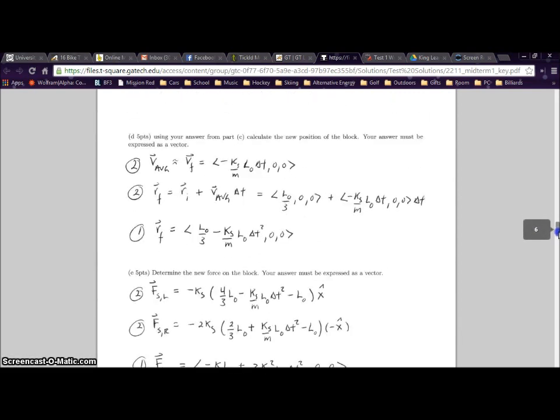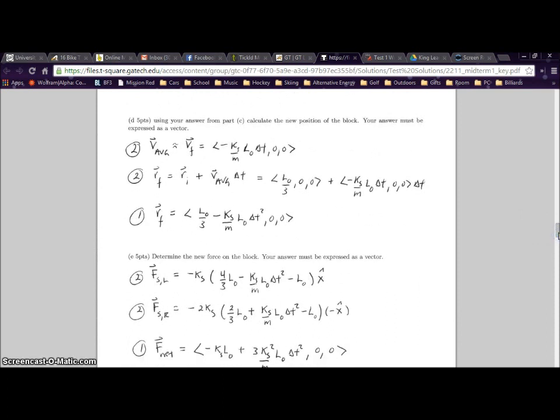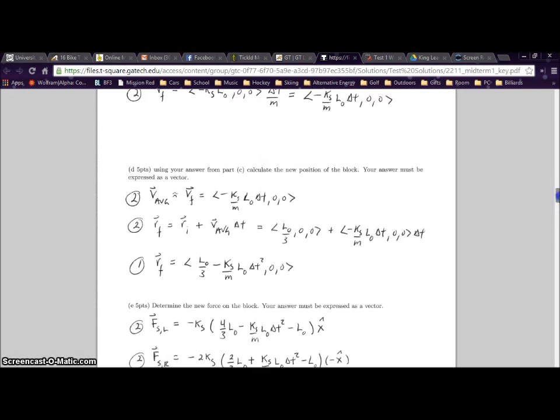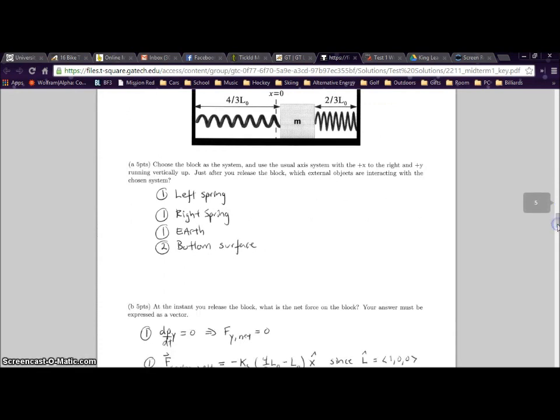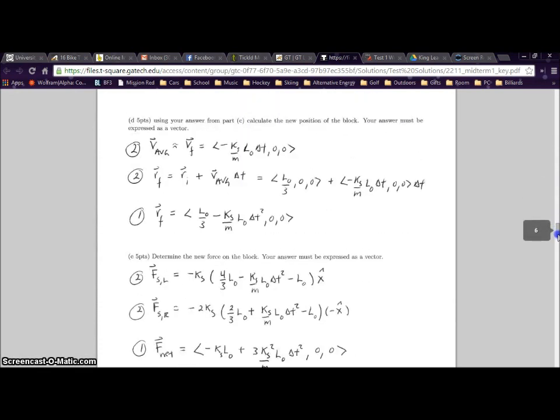From this, we can come to part E. We keep all of that the same - we have 4/3 L0 minus L0, exactly the same as we had with KS and the X vector. But what we have to change is what the new position will be after some delta T. We know from the diagram that the block is going to move towards the left or in the negative X direction.